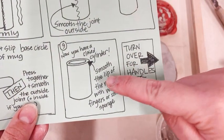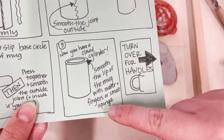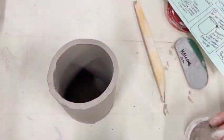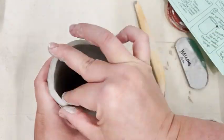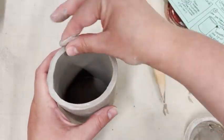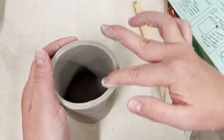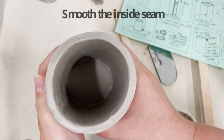Now you have a cylinder. So you want to smooth the lip of your mug with water on your fingers or with a sponge. Just a little bit of water or slip, pinching the lip in between my two fingers and just smoothing them.